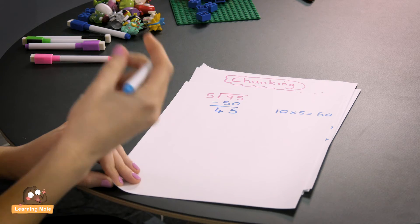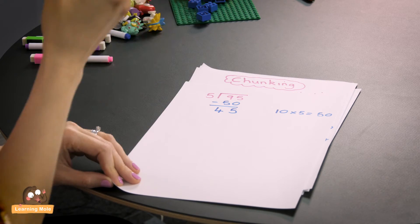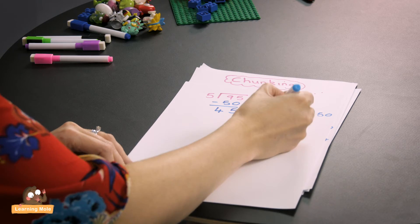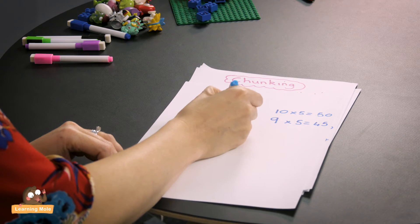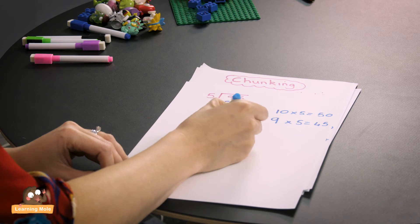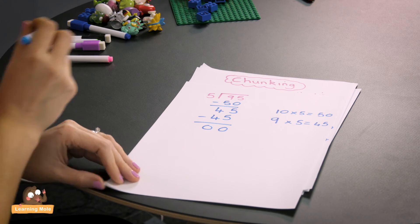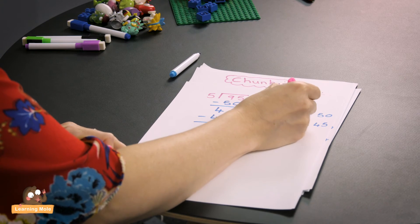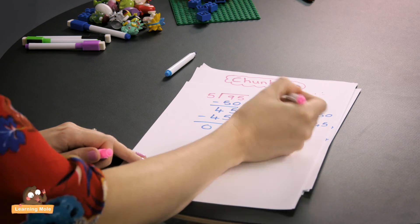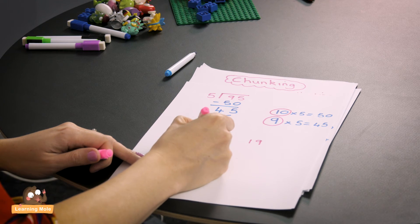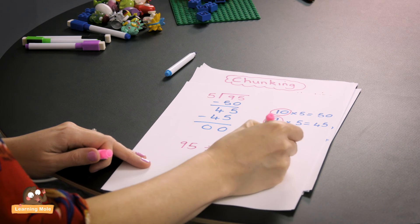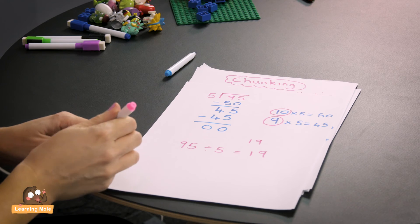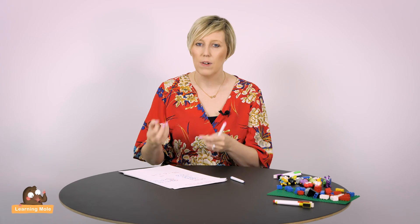You'll be asking your child is there a 5 times table that equals 45, and hopefully they'll be able to tell you that 9 times 5 equals 45. Then you'll be taking away your 45 just to make sure that everything is divided, so you've got 0. Your final step is finding out what you divided to begin with. You've got your 10 and your 9, which is 19. So 95 divided by 5 equals 19. That's a really simple way of starting to introduce your child to division and showing them that relationship between multiplication and division.